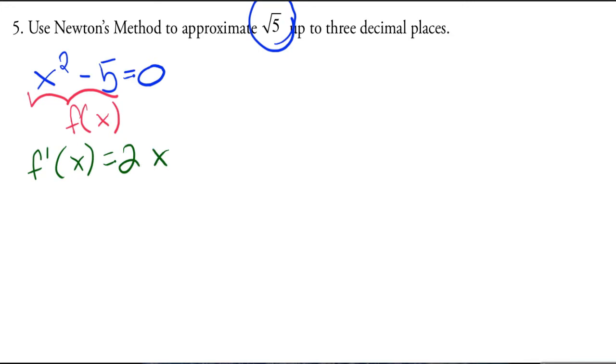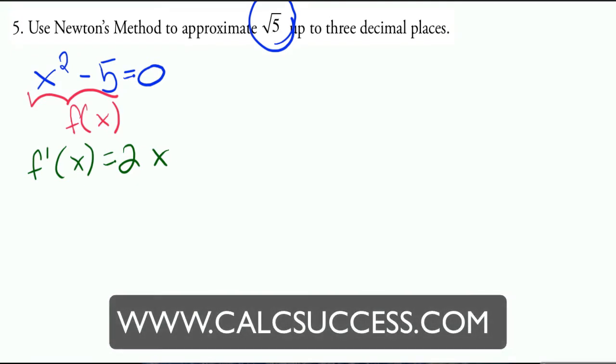We need our initial guess. Since we know square root of 5 is somewhere between—square root of 4 is 2 and square root of 9 is 3—it's somewhere between 2 and 3 but closer to 2, so let's start with our guess being 2.